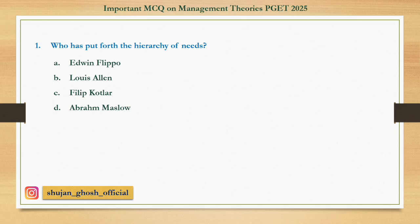Question number 1: Who has put forth the hierarchy of needs? Option A: Edwin Filippo. B: Louis Allen. C: Philip Kotler. D: Abraham Maslow. Answer is Abraham Maslow.